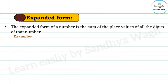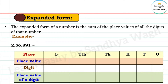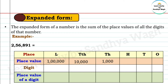Let's understand this through an example. We have the number 2,56,891. Let's arrange this number in the place value chart. The place value of the lakhs place is 1 lakh; ten-thousands place is 10,000; thousands place is 1,000; hundreds place is 100; tens place is 10; and ones place is 1.